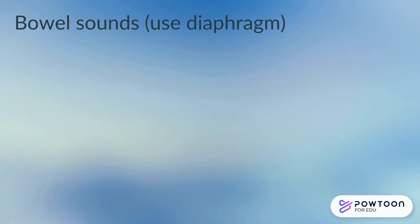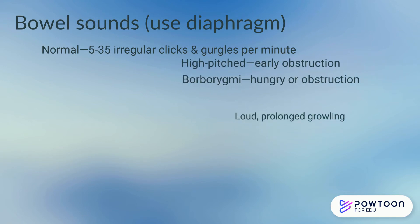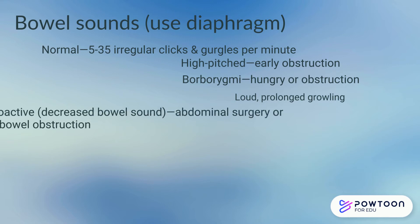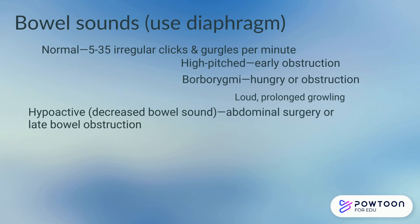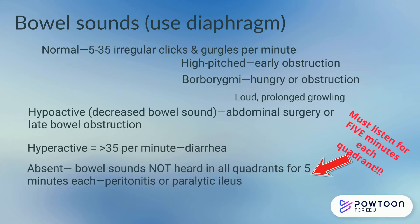It's normal to hear five to thirty-five clicks or gurgles per minute when listening to bowel sounds. The term is called borborygmi, and that's called stomach growling. Hypoactive is less than five per minute, hyperactive is greater than thirty-five per minute, and absent is no sounds for five minutes.